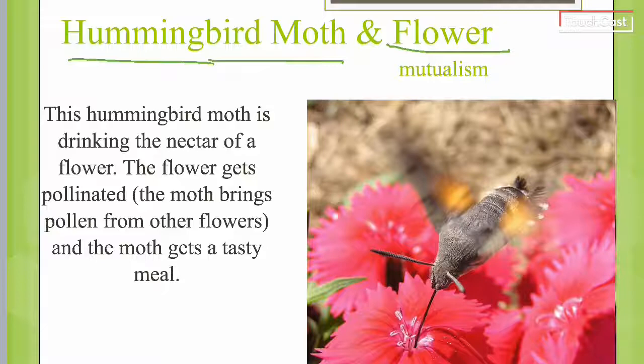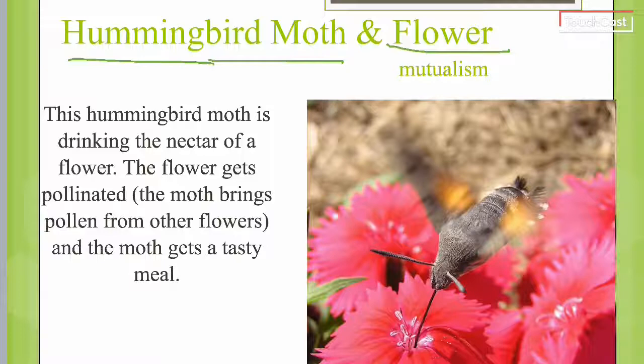The hummingbird moth is drinking the nectar of the flower — the moth gets food and nutrients. The flower gets pollinated, which is something it needs to survive. The moth brings pollen from other flowers and gets a tasty meal. The flower gets pollinated, the moth gets food — plus/plus for both.